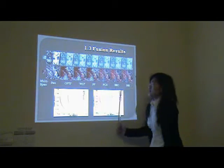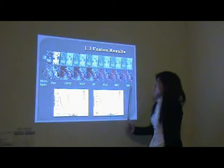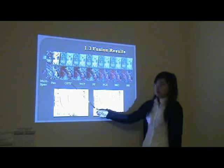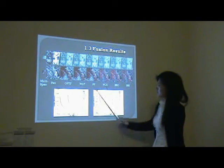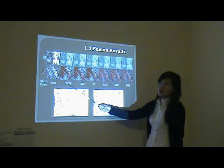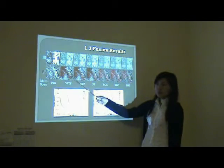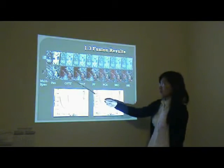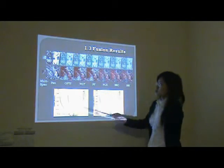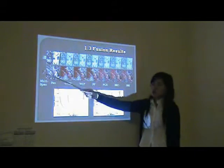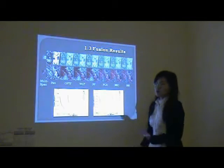Here is the fusion result with different methods. From right to left, the result becomes better. The optimal fusion is fast. It can improve the spatial details significantly and preserve the multispectral color regarding the two original fusion images at different spatial ranges.